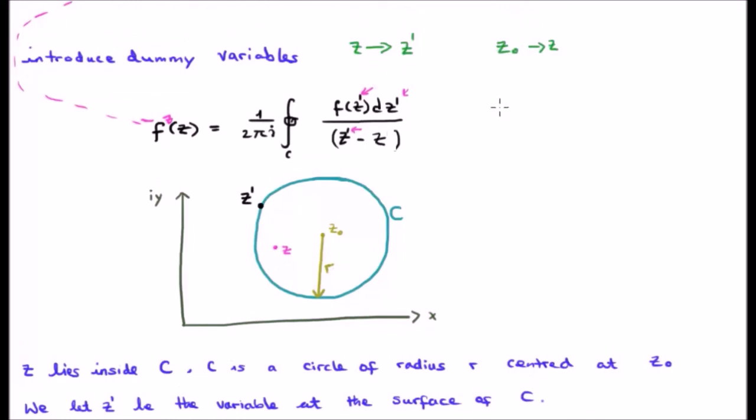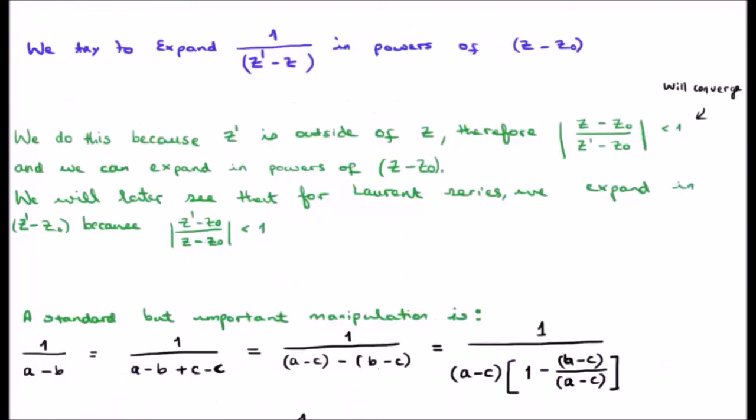Finally, look at the denominator. The denominator is 1 over z prime minus z. This is important. We try to expand 1 over z prime minus z in powers of z minus z zero, not z prime. We do this because z prime is outside of z. Therefore, if we look at z prime minus z zero divided by z minus z zero, its magnitude will be less than 1 and such a power series will converge.